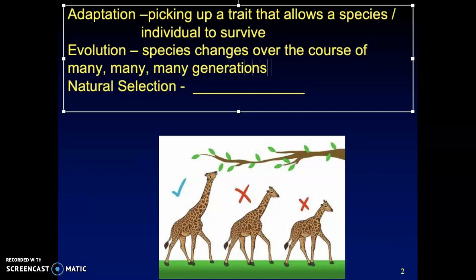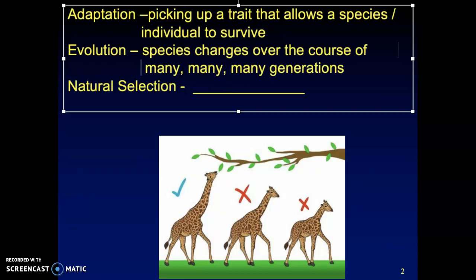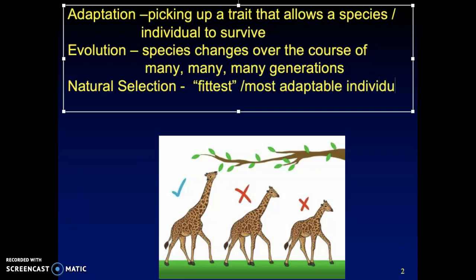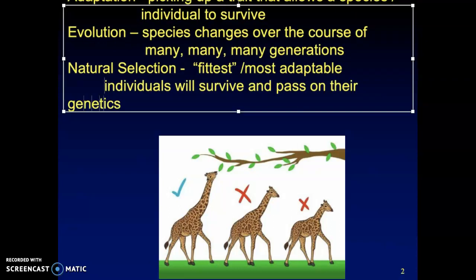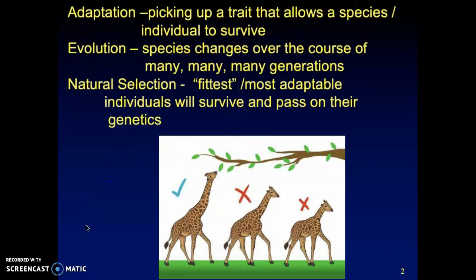The species is what's changing, eventually causing those species to become different — and eventually new species. Natural selection is the idea proposed by Charles Darwin and Alfred Russell Wallace. In their idea, the fittest, or most adaptable, individuals will survive and pass on their genetics. Their offspring survive and pass on their genetics, and so on and so on. That's the difference between adaptation, evolution, and how natural selection plays into this picture.